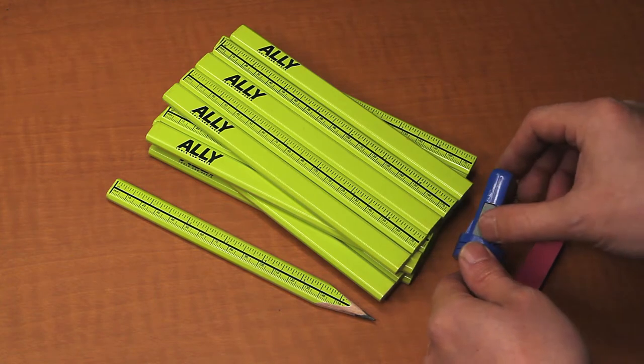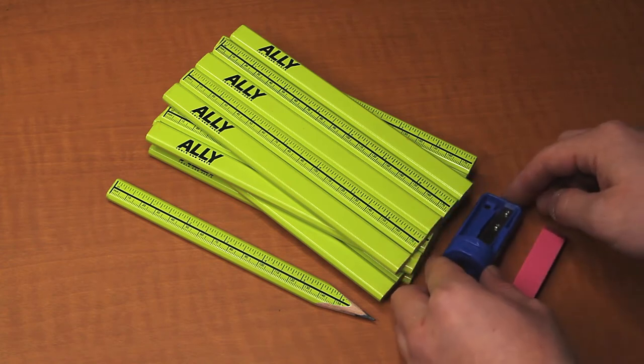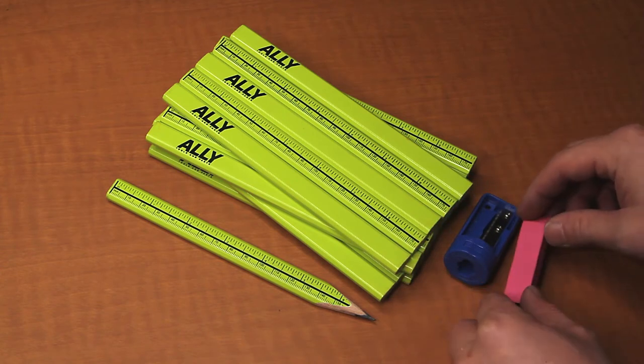Each kit includes a blue pencil sharpener that features a sanding block. We also include a pink eraser to erase lead markings from paper and wood.